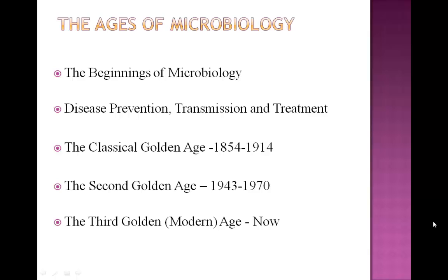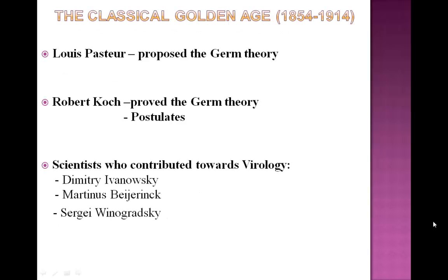Now let's focus our attention on the classical golden age of microbiology. During this golden age, several scientists contributed towards the advancement of microbiology. Two of the scientists who contributed significantly towards key concepts were Louis Pasteur, who proposed the germ theory, and Robert Koch, who proved the same and formulated several criteria to establish the germ theory, known as postulates. Some scientists contributed to the field of virology — the study of viruses — including Dimitri Ivanovsky, Martinus Beijerinck, and Sergei Winogradsky.